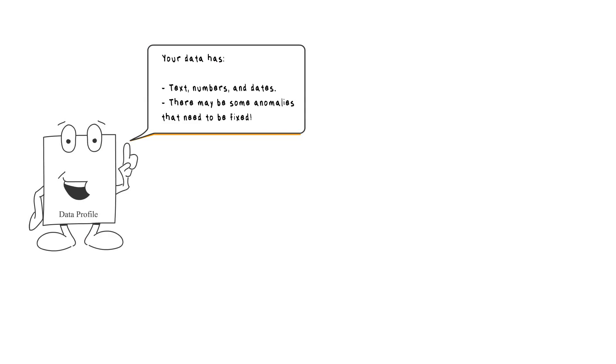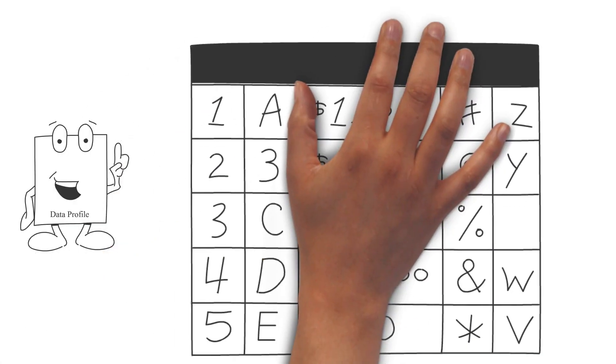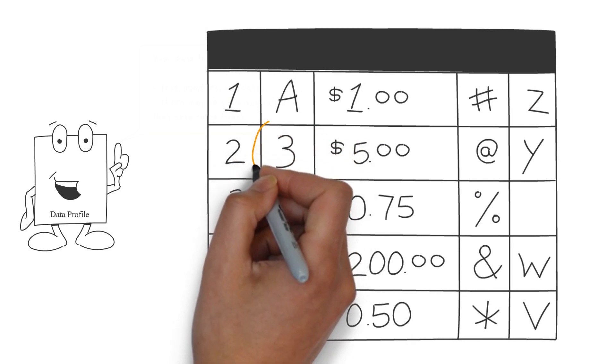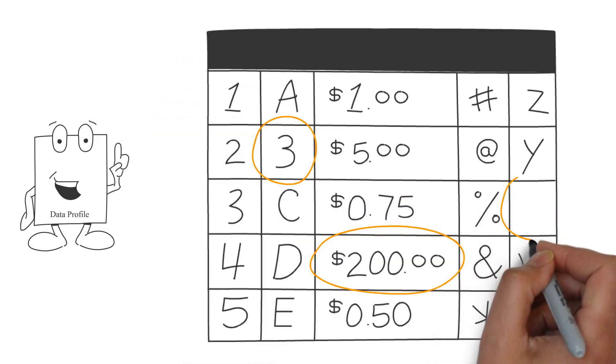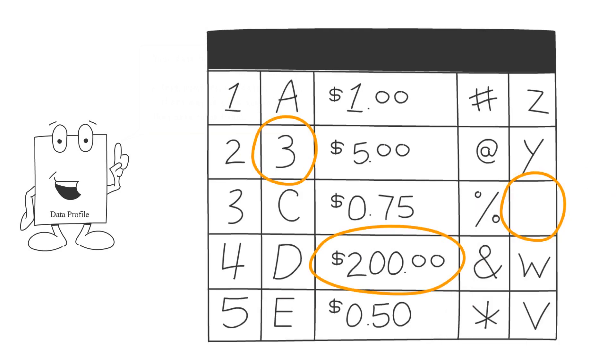For example, you can tell if there are numbers in text columns, values that seem out of place with other values, missing information, and so much more.